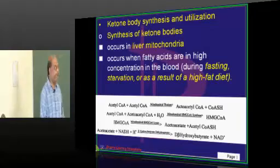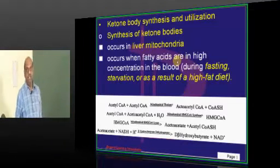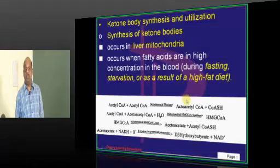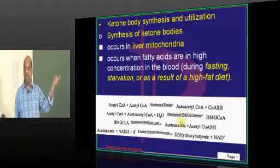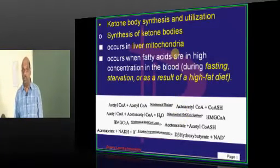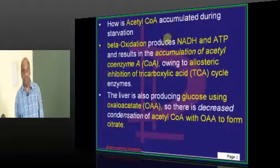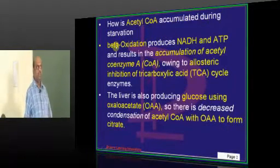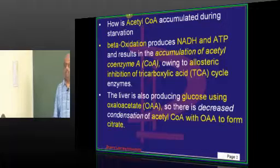Ketone bodies are produced in the mitochondria in the liver. Whenever we are fasting, whenever we are starving, or even whenever we are on a very high fat diet where too many acetyl-CoAs are produced, they are packed in the form of ketone bodies. From where will this acetyl-CoA come from? Basically, for the production of ketone bodies.